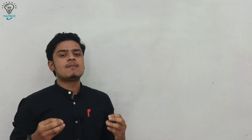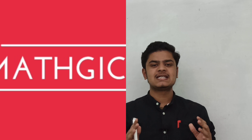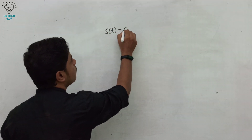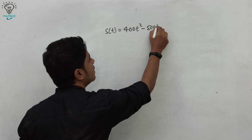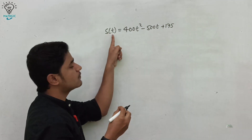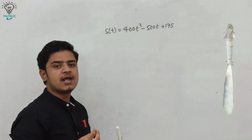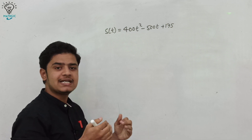So let's get into some practical examples. Let's suppose the motion of a rocket is given by the function s(t) = 400t² − 400t + 175, where t is the time taken and s(t) is the distance travelled by the rocket. We are going to find the instantaneous speed of the rocket at 10 seconds.